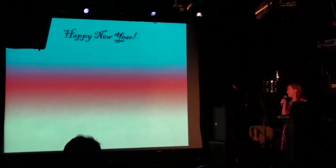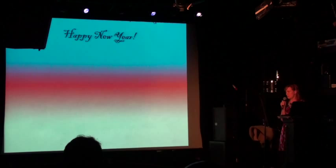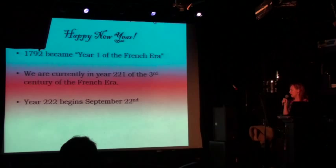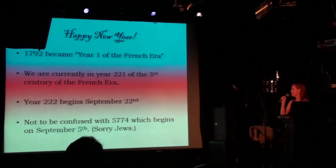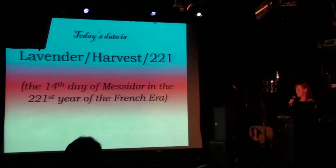Nothing says revolution like just setting the clock back to zero, which they decided to do. They decided they were not going to use any sort of BC or AD — nothing was going to be pegged anymore to any sort of religious timeline. So they decided that 1792 would become year one of the French era. We are currently in year 221 of the third century of the French era, and year 222 begins on September 22nd of this year. Please do not confuse it with 5774 — sorry to my fellow Jews, that happens on September. So today's date is actually Lavender Harvest 221 — it's the 14th day of Messidor in the 221st year of the French era. It's lavender day.